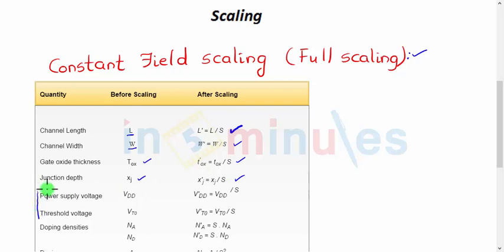Now these are very critical. This is where the difference is between constant field scaling and constant voltage scaling. In constant field scaling, the power supply voltage, the threshold voltage, and all other voltages associated would also be scaled down by a factor of s. We will see very shortly in partial scaling that does not happen.